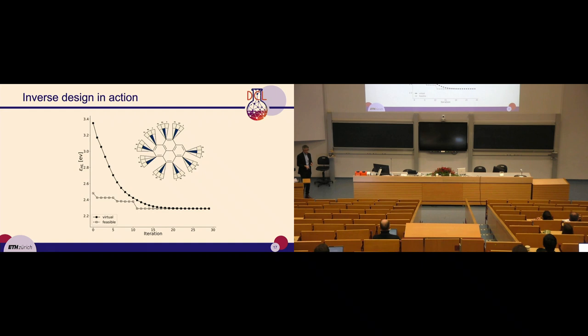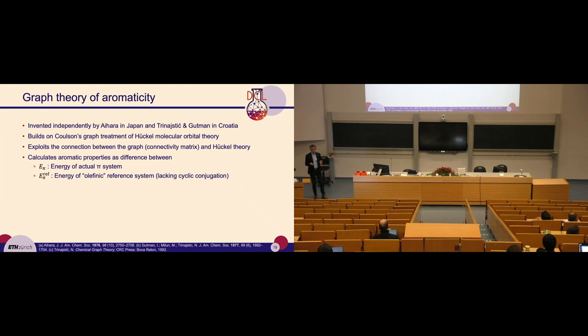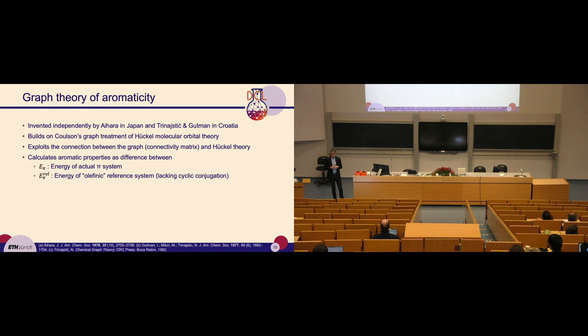In the third application we also use Hückel theory, but we're interested in aromaticity — a concept from organic chemistry. We use the graph theory of aromaticity, a very old theory from the 1970s, discovered independently in Japan and in Croatia, building on Coulson and Rushbrook's treatment of Hückel theory from a graph theoretical standpoint. We exploit the idea that the adjacency or connectivity matrix is very closely related to the Hückel matrix. In the graph theory of aromaticity, a crucial property is the olefinic reference system — a system which lacks cyclic conjugation — and we calculate various properties as the difference between the real system and the reference system.